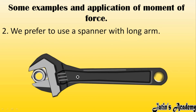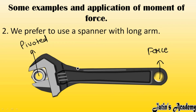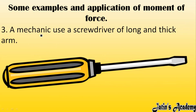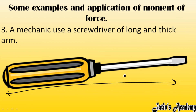Second application: we prefer to use a spanner with a long arm. The pivoted point is fixed, and force is applied at the far end. The maximum perpendicular distance between the point of application of force and the pivot means greater turning effect, so we can rotate the bolt easily by applying less force. Third application: a mechanic uses a screwdriver with a long and thick arm, for the same reason — greater distance means greater turning effect with less force.